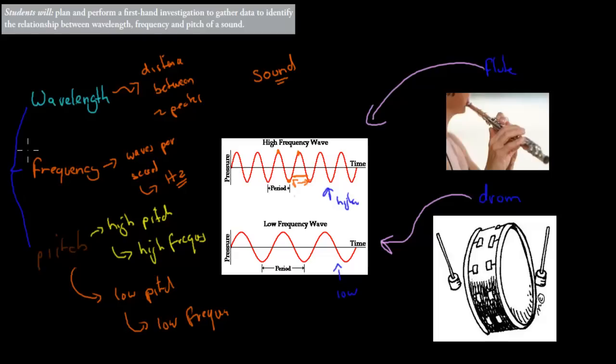The dot point says students will plan and perform a first-hand investigation to identify the relationship between wavelength, frequency, and pitch of sound. So we're trying to figure out that these three are connected. The higher the wavelength, the lower the frequency, and if you've got low frequency, that means low pitch. Whereas the shorter the wavelength, the higher the frequency, the higher the pitch.